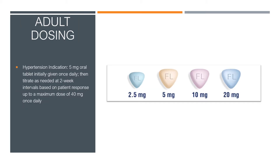I will now discuss adult dosing for Bystolic. For the hypertension indication, 5 mg oral tablet will be initially given once daily, then titrate the dose as needed at 2-week intervals based on patient response and tolerability, up to a maximum of 40 mg once daily.